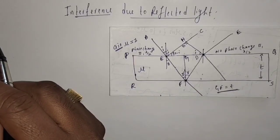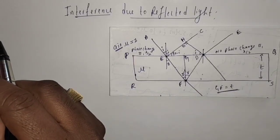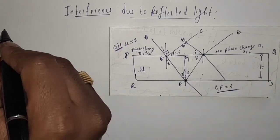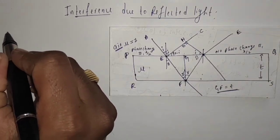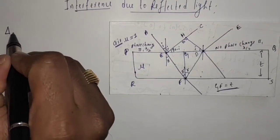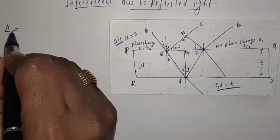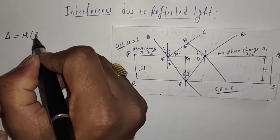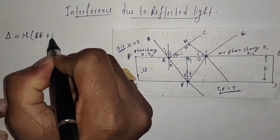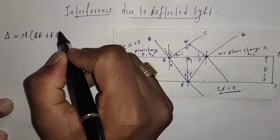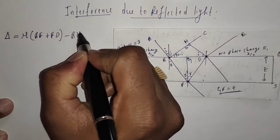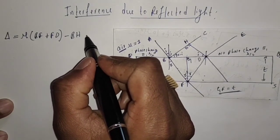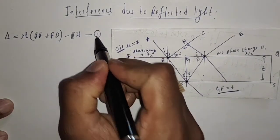In the last video, we discussed optical path difference and wrote an expression for it. That is, delta equals optical path difference which equals mu times (BF plus FT) minus BH. This is the optical path difference — let us denote this equation by 1.